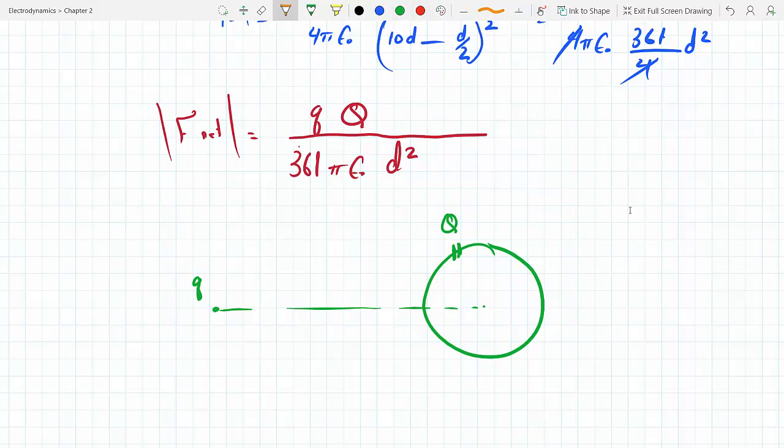So there's gonna be a force going down this way. But however, due to the symmetry of the sphere, there's another piece right on the other side of the axis that I drew through the center of the sphere. There is another force that is doing the same thing.